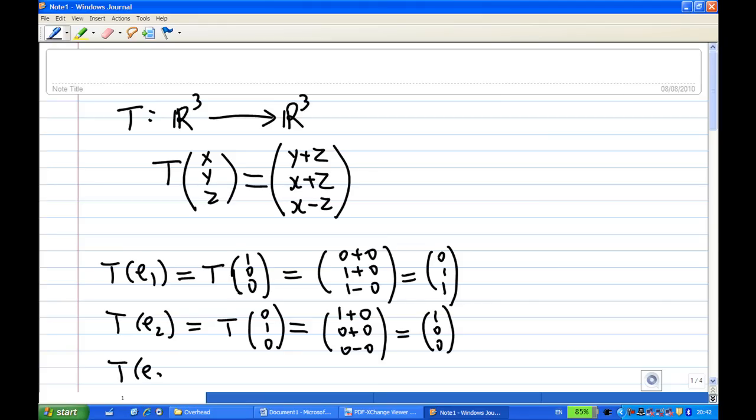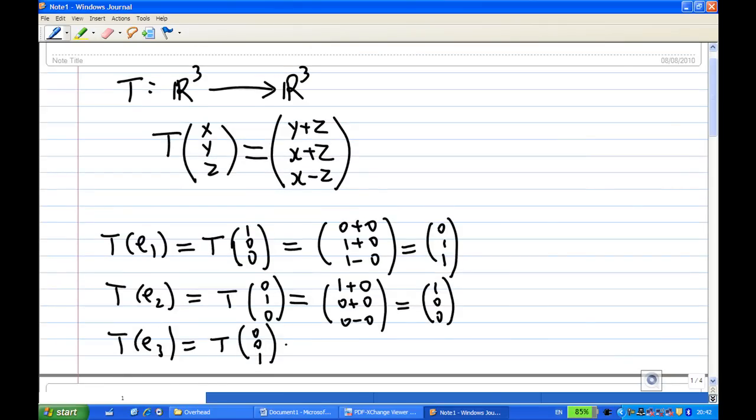Now T(e₃) is the image of (0, 0, 1) under T. The image of (0, 0, 1) under T means x is 0, y is 0, z is 1. I have 0 plus 1, 0 plus 1, 0 minus 1, and this will give me (1, 1, -1).